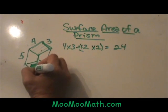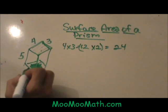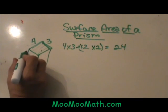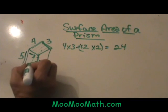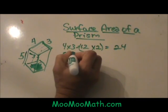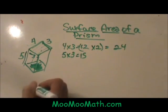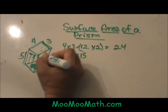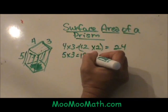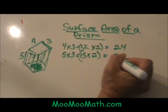Now what I am going to do is look at the side over here, the front side, and this is five by three. So this front is five by three which is fifteen, but I have a matching side over here that is also fifteen, so I am going to take that and double it to thirty.